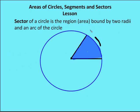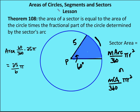What's a sector? A sector is a portion of a circle bound by two radii. The sector has a vertex that's the center of the circle. So a sector of a circle is a region bound by two radii and an arc of the circle, and its vertex is the center of the circle. This blue shaded area here is considered to be a sector. That brings us to Theorem 108: the area of a sector is equal to the area of the circle times the fractional part of the central angle determined by the sector's arc.